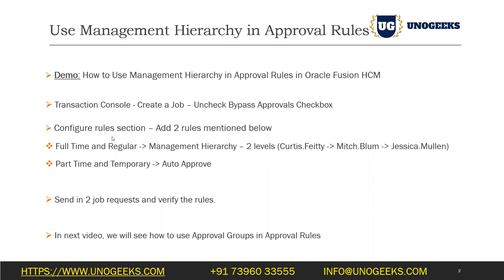We'll stick to the rules that we have configured in the previous section. At this point in time, the job create approval rules look like this: if it's a full-time regular job, it will go to the mitch.blum user for approval. We have seen how to set it up in the previous one, and if it's a part-time temporary job, they get auto-approved.